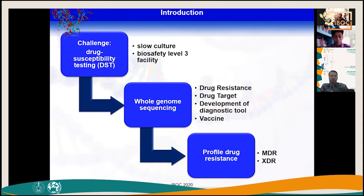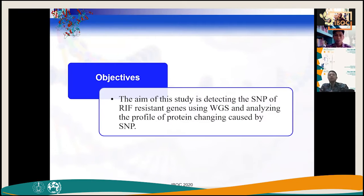Whole genome sequencing data can be used to predict MDR and XDR strains of Mycobacterium tuberculosis. This presentation focuses on rifampicin resistance. The study objective is to detect single nucleotide polymorphisms (SNPs) in rifampicin resistance genes using whole genome sequencing and to analyze the protein profile caused by these SNPs.